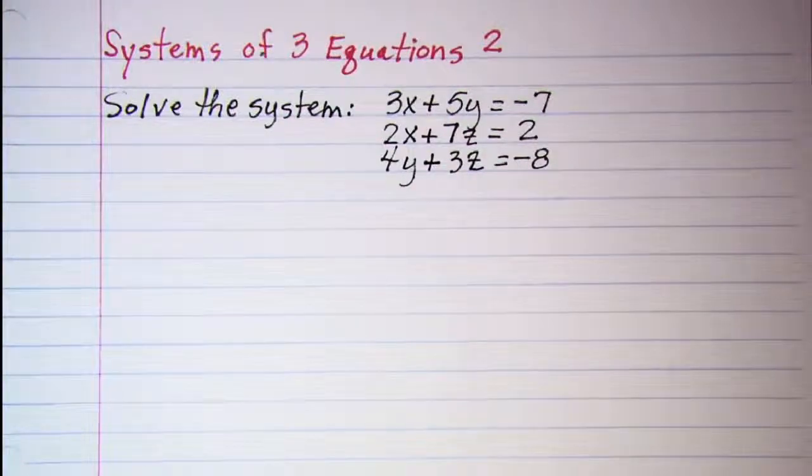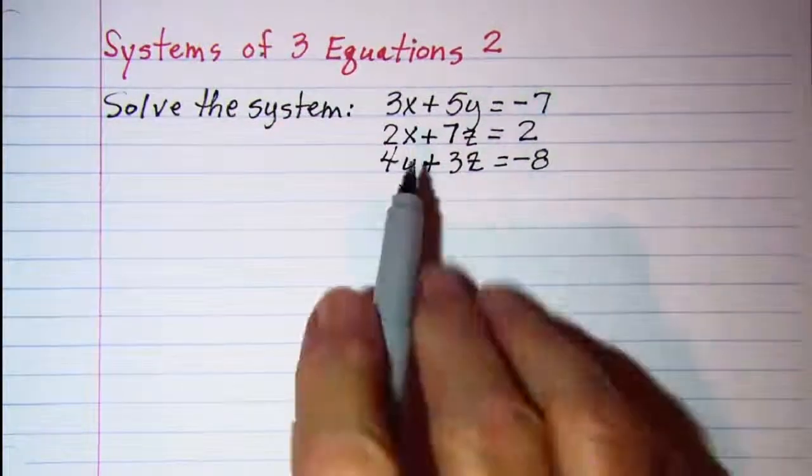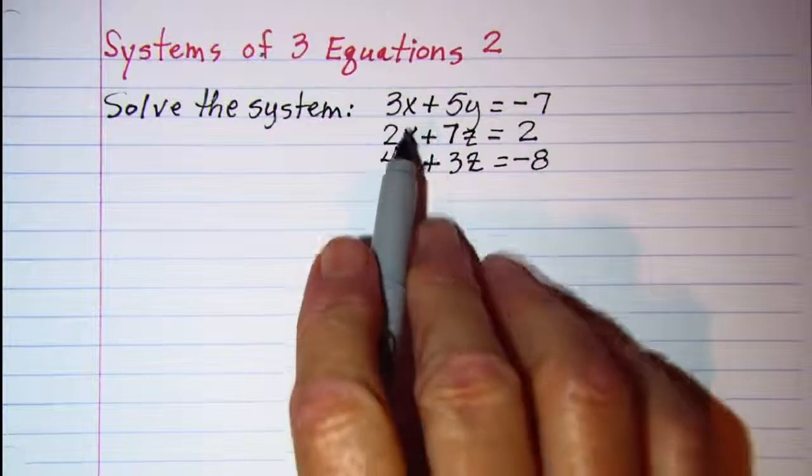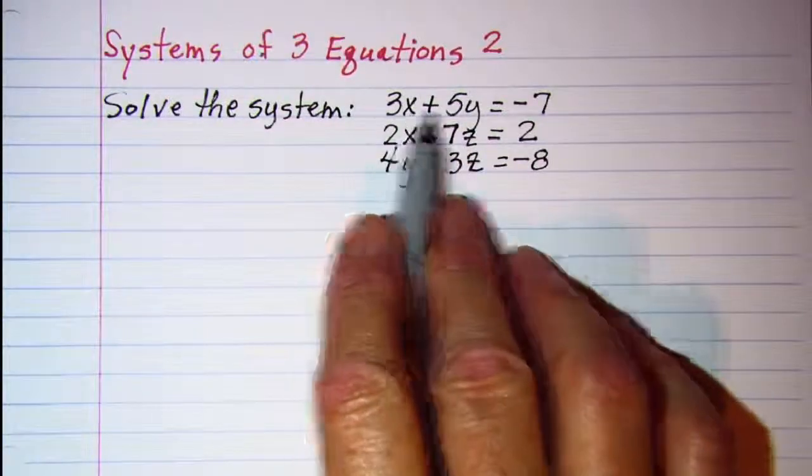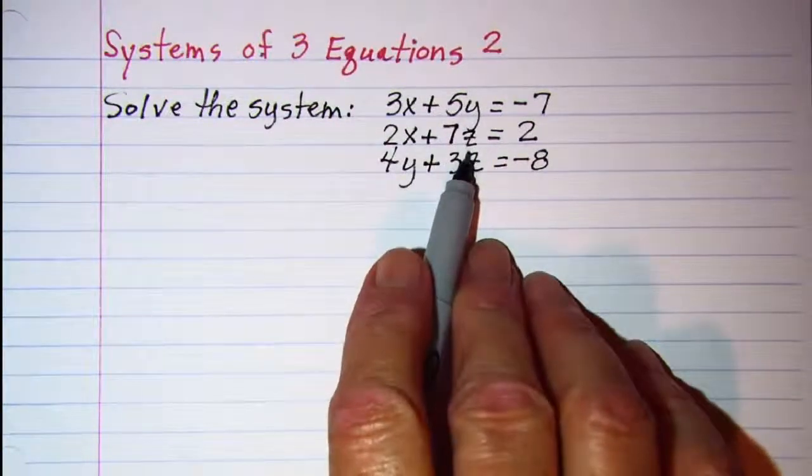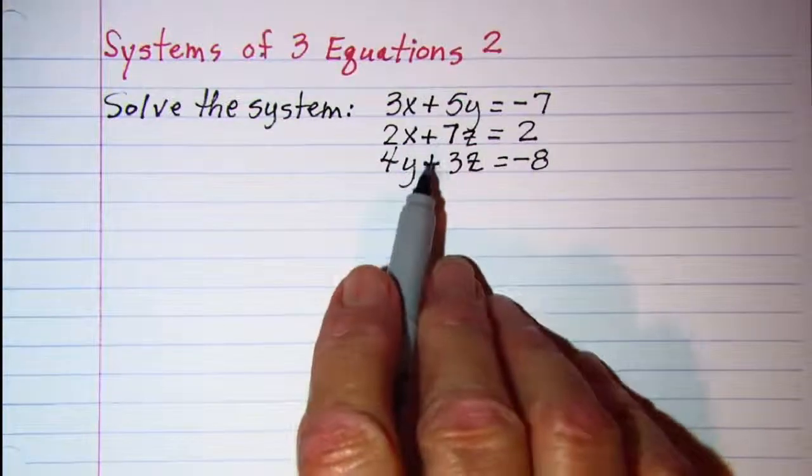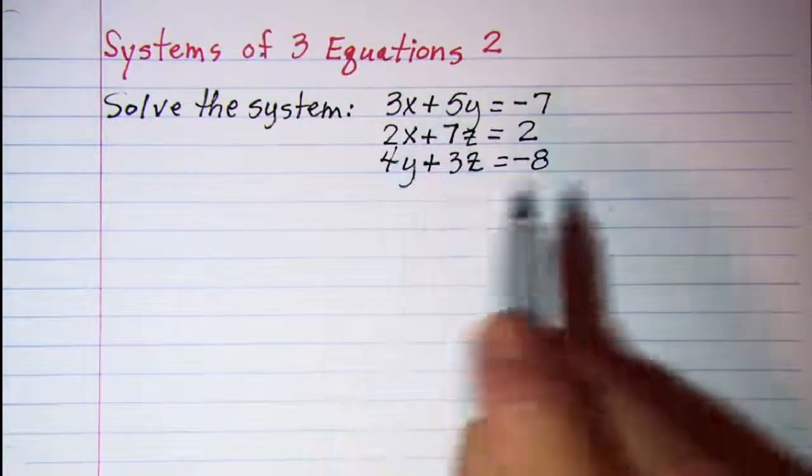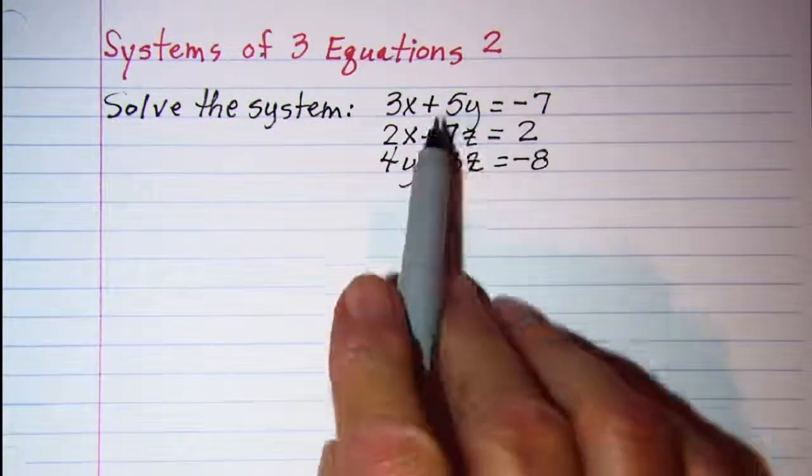Now the first thing I want to do is rewrite this since I have three variables x, y, and z. I'm going to rewrite this with placeholders for the variables that are missing.